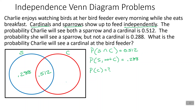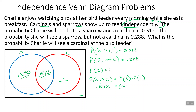Everything should add up to 1, but we're missing the cardinal-only section and the outside. We are trying to find the probability of cardinal — that's the whole cardinal circle, which is 0.512 plus the cardinal-only part. We're also told they are independent, so the probability of sparrow-intersect-cardinal equals the probability of sparrow times the probability of cardinal. We know the intersection is 0.512. The probability of sparrow is 0.288 plus 0.512, which equals 0.8. So we divide both sides by 0.8, giving us the probability of cardinal equals 0.512 divided by 0.8, which is 0.64.